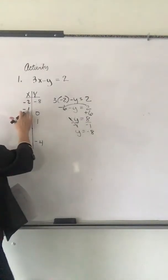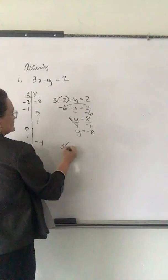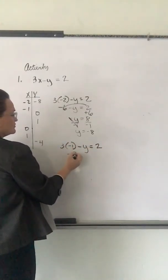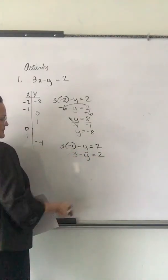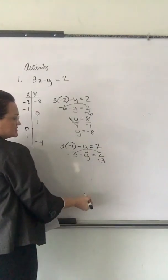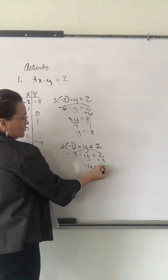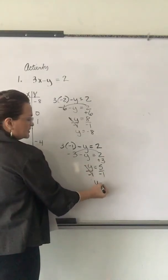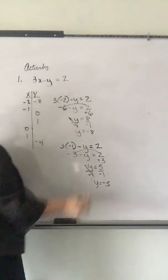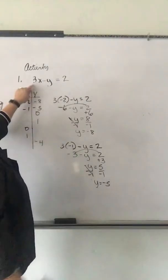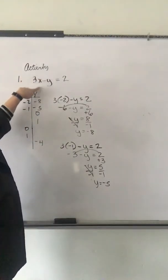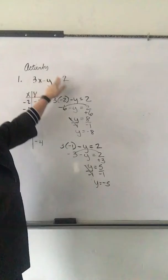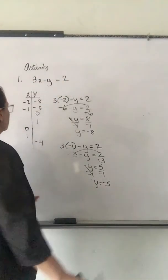And then just do it again. Negative 1. So, we start over. 3 times X is negative 1 minus Y equals 2. 3 times negative 1 is negative 3. Then we throw the negative 3 to the other side, making it plus 3. So, we have negative Y equals 2 and 3 is 5. Divide by negative 1. And there's another solution. Negative 5. All right.